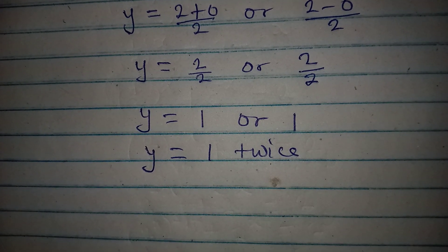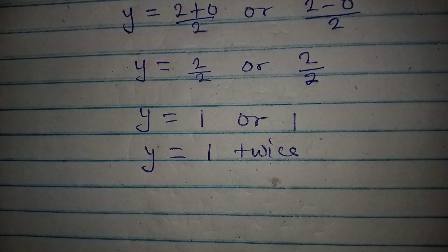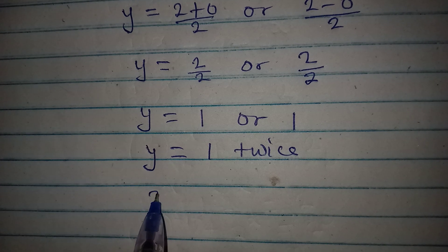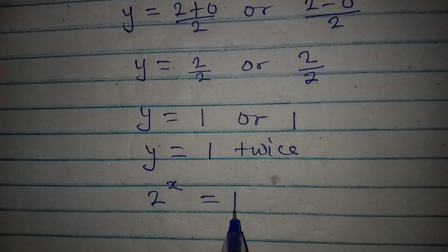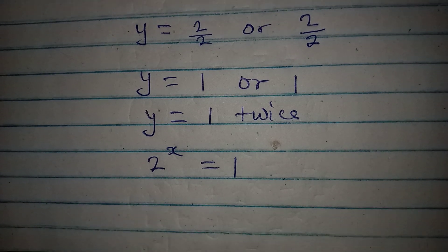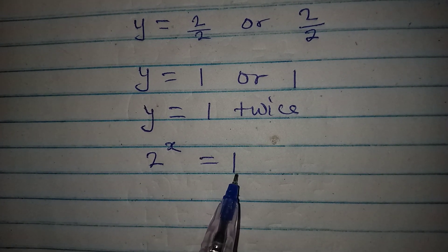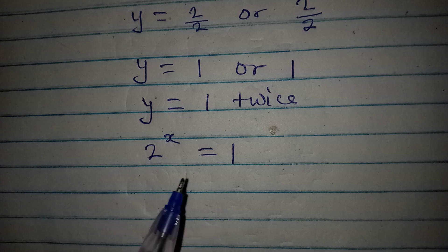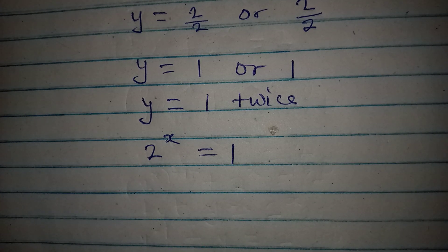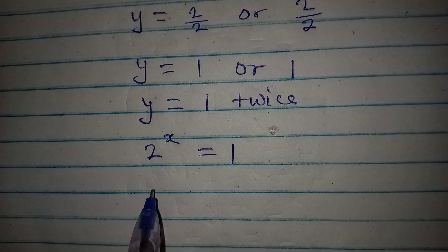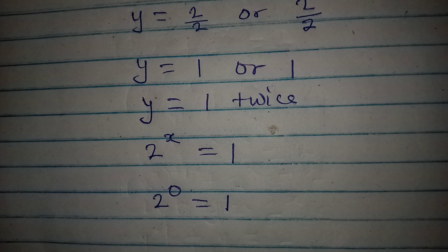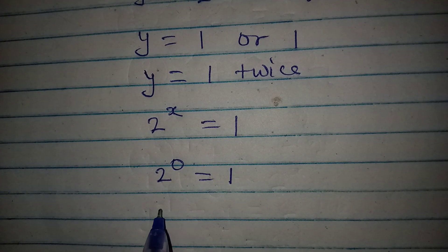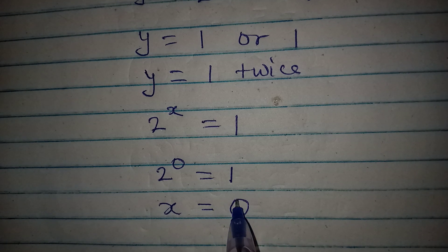We are not looking for the value of y — we want the value of x. Remember y equals 2 to the power of x. So 2 to the power of x equals 1. What value of x gives us 1? It is 0, because 2 to the power of 0 equals 1 — any number to the power of 0 equals 1. So x equals 0.